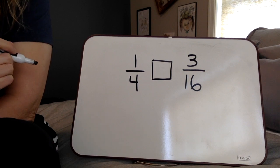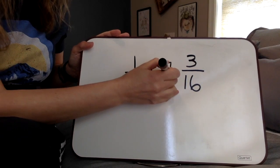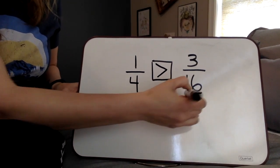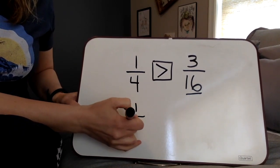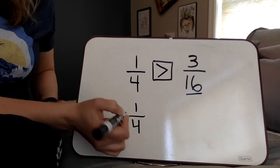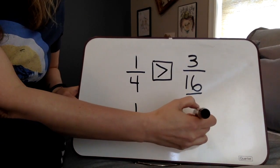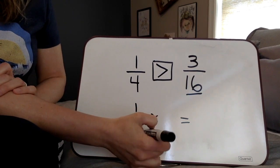But how do we prove it, especially when they're that close in size? Well, again we're going to use our knowledge of equivalent fractions. So if we want to get a denominator of 16 for our 1/4, because that way we can compare them directly, we're again going to use our identity property. So we want to multiply by a value of 1.